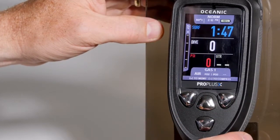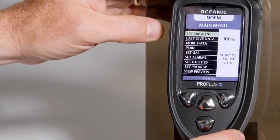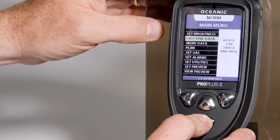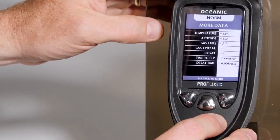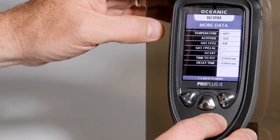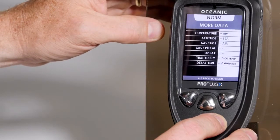To enter the menu under the normal screen, you'll arrow down to set brightness, view your last dive, view more data, the current status of everything that's in the computer, temperature, the altitude calibration, the gas setting, your O2 SAT level, time to fly, and DSAT time.